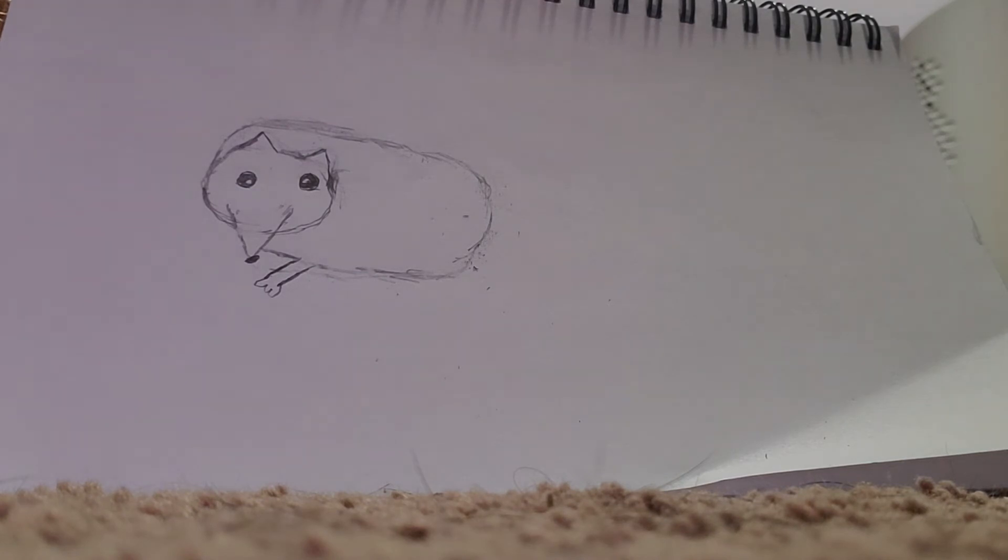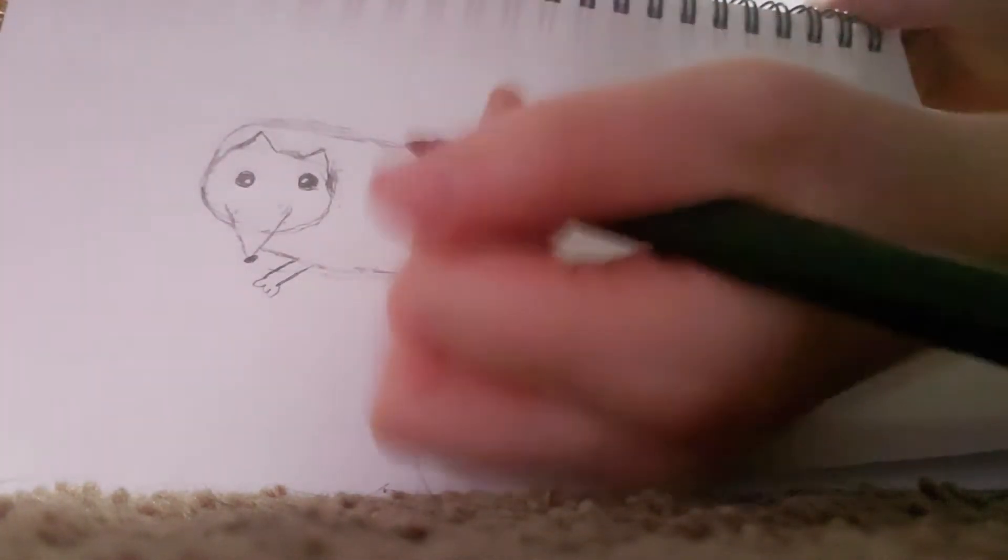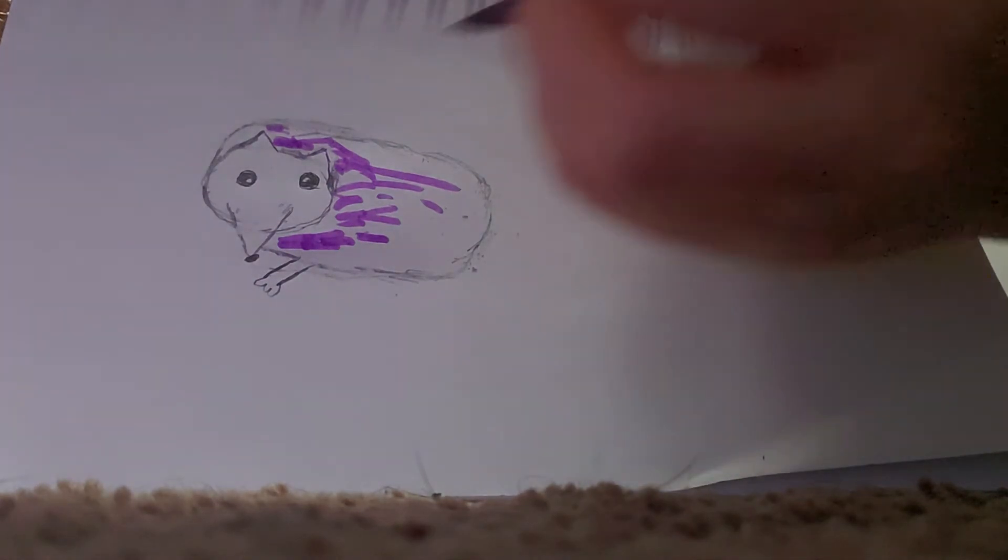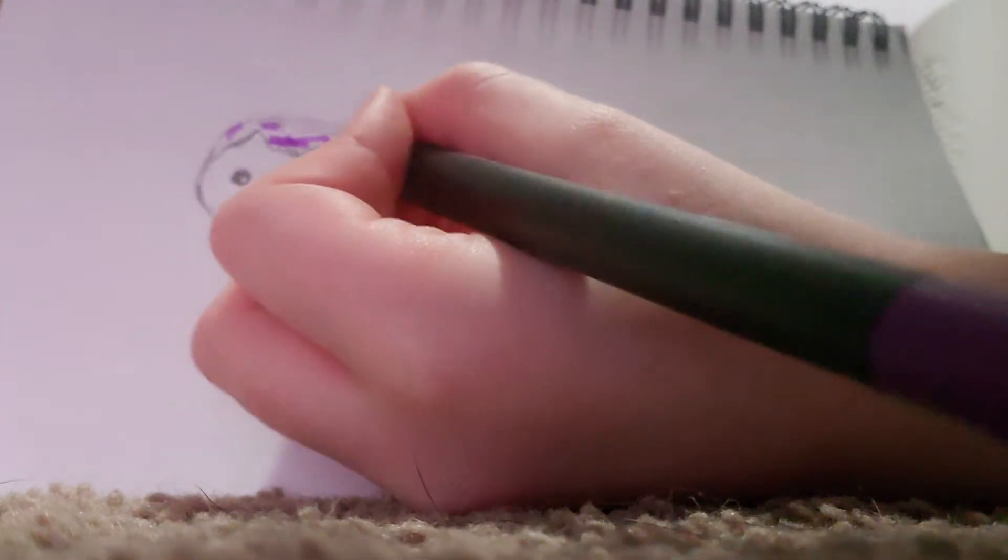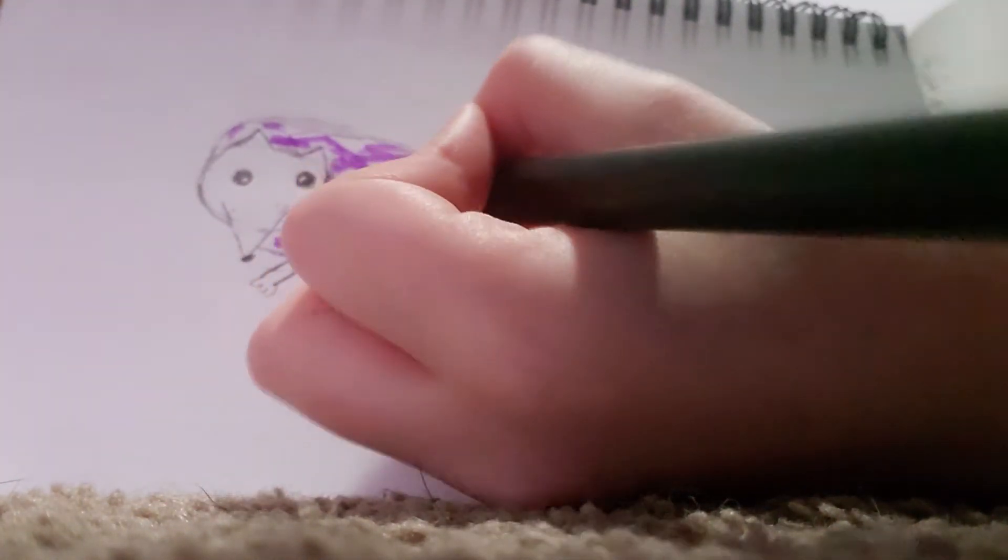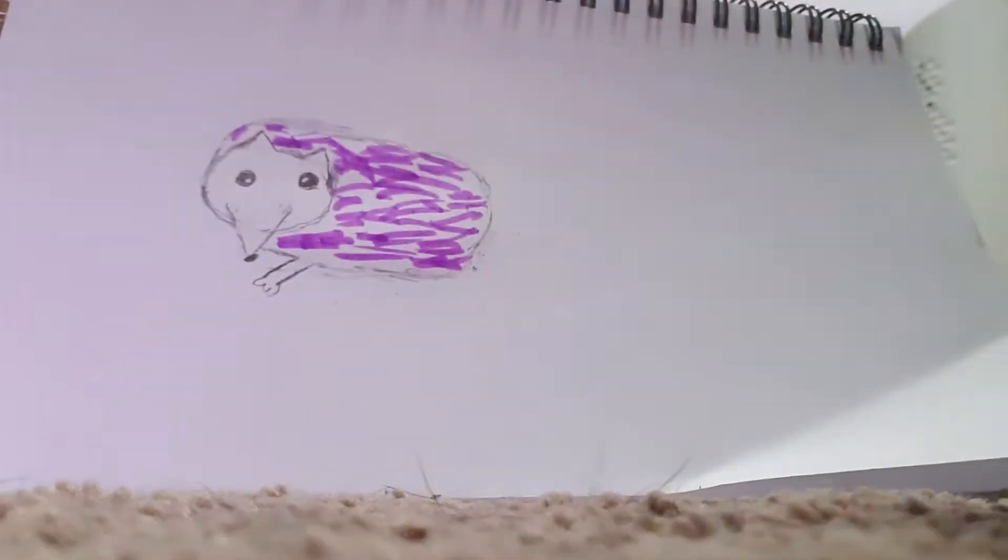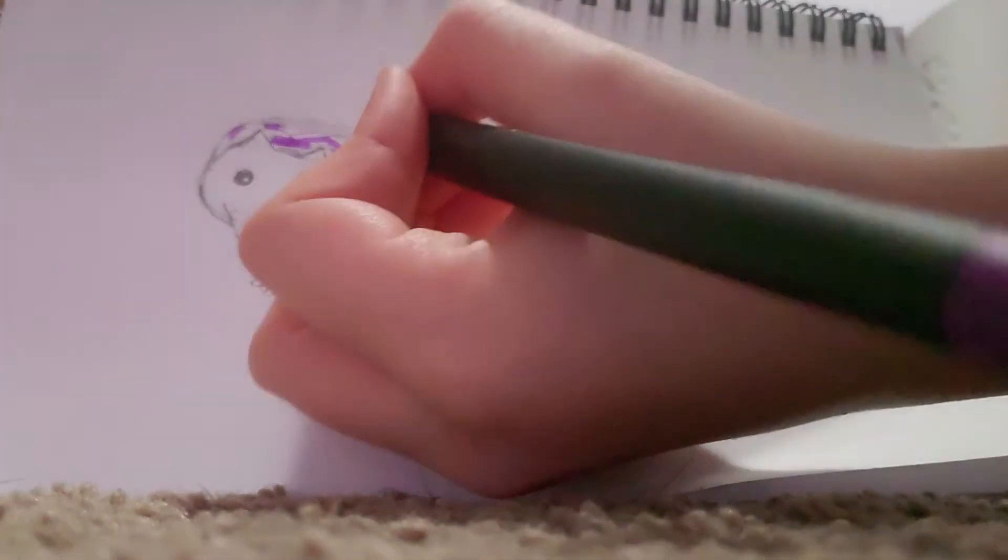You're going to want to start with one of your colorful markers and draw some little spikes. I'm using the brush tip. You're just going to want to draw some little spikes all over. It'll make it look more real if they're scattered. I'm not quite done yet. You're just going to want to put them scattered but also take a lot of time thinking about where you want to put your hedgehog's quills.